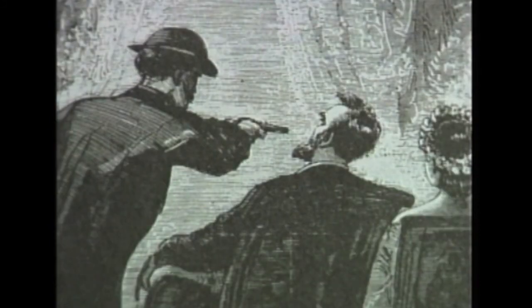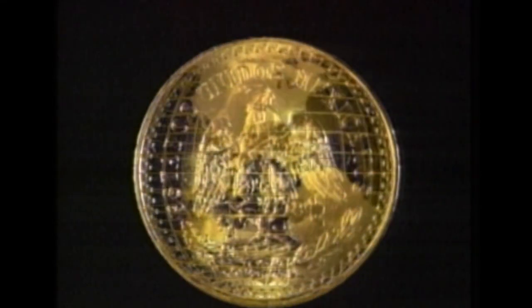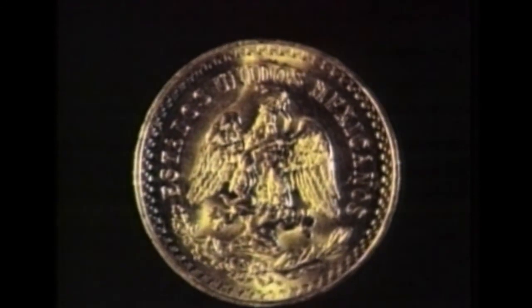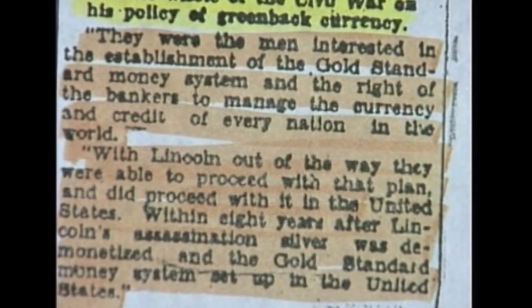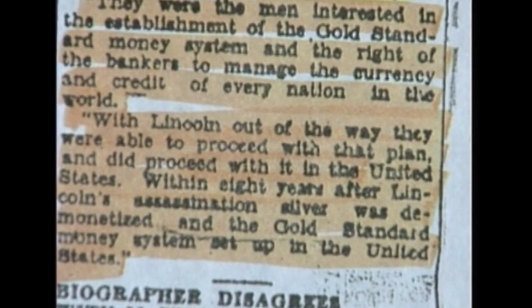Interestingly, McGeer claimed that Lincoln was assassinated not only because international bankers wanted to reestablish a central bank in America, but because they also wanted to base America's currency on gold — gold they controlled. In other words, put America on a gold standard. Lincoln had done just the opposite by issuing U.S. notes — greenbacks — which were based purely on the good faith and credit of the United States. McGeer was quoted as saying: "They were the men interested in the establishment of the gold standard and the right of the bankers to manage the currency and credit of every nation in the world. With Lincoln out of the way, they were able to proceed with that plan and did proceed with it in the United States."